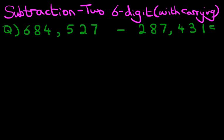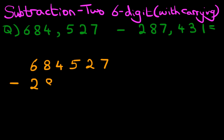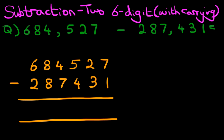The first stage is to rewrite this question into the vertical format. Six hundred and eighty-four thousand, five hundred and twenty-seven, minus two hundred and eighty-seven thousand, four hundred and thirty-one. Let's label the columns as well: units, tens, hundreds, thousands, ten thousands, hundred thousands. We are now ready to go ahead and do the calculation.